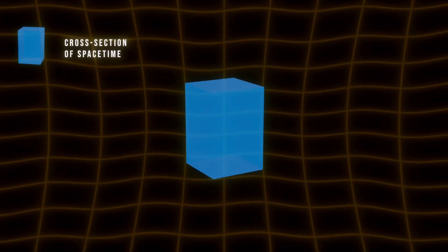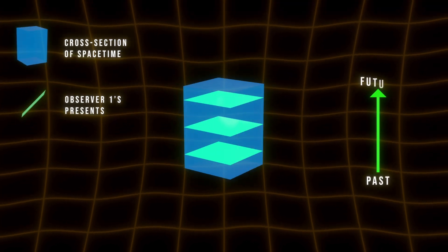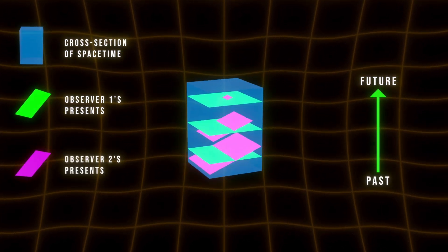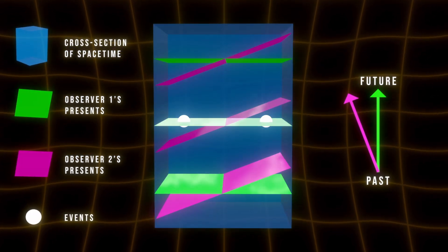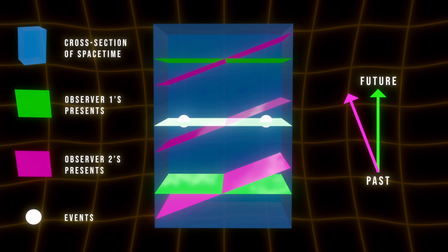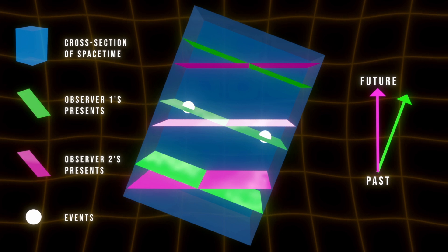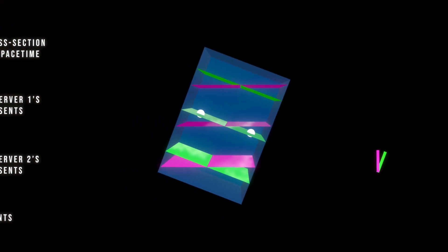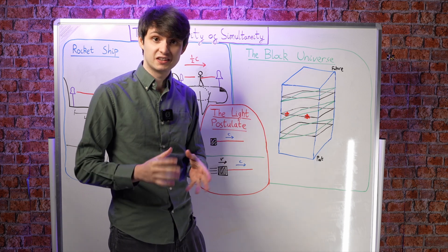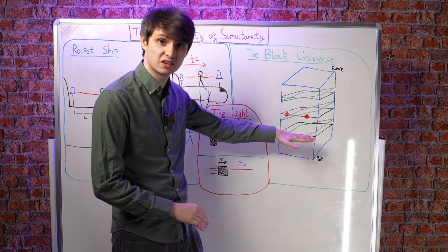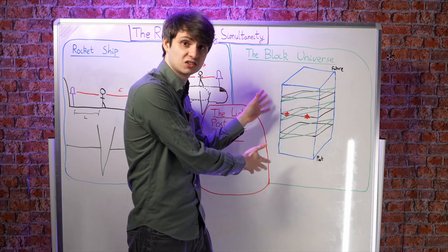I might slice up the block in a certain way, where each of these slices are my presents going from the past at the bottom to the future at the top, but someone else moving with respect to me will slice up the block totally differently. Events that exist for me on the same slice, and so will be simultaneous with one another, will not be on the same slice for someone moving with respect to me, and so they will not see these events as being simultaneous. Since the block can be sliced up in different ways by different observers, this suggests that there's not just one slice of it that exists at any one time. In a sense, the whole block must exist all at once.